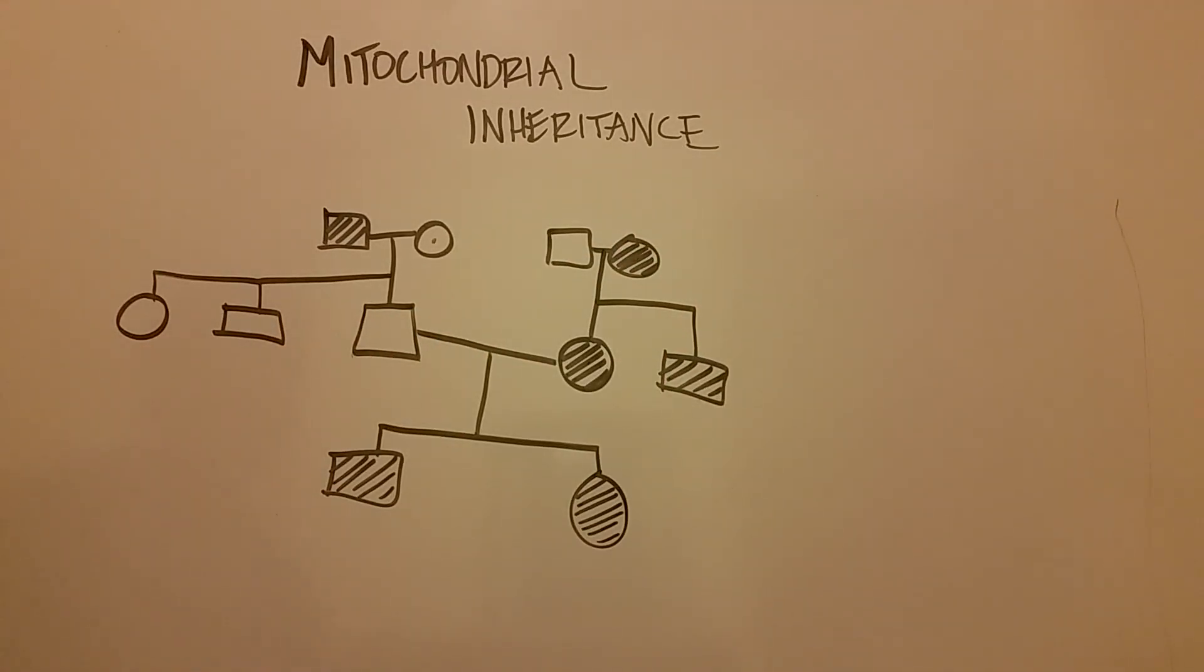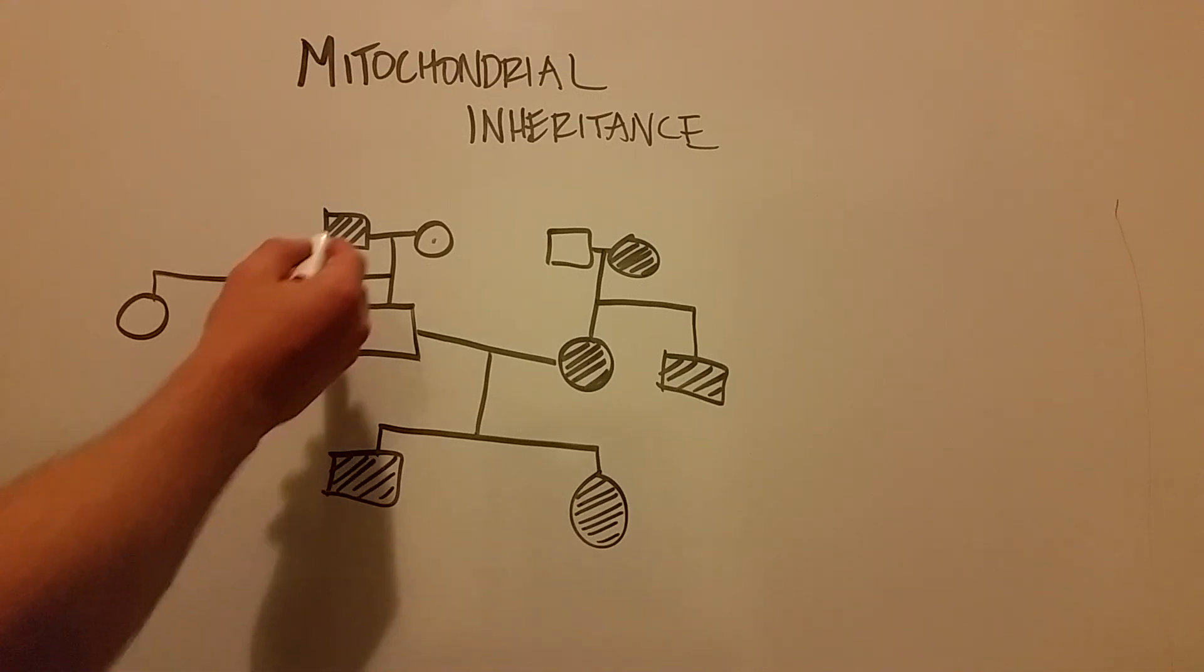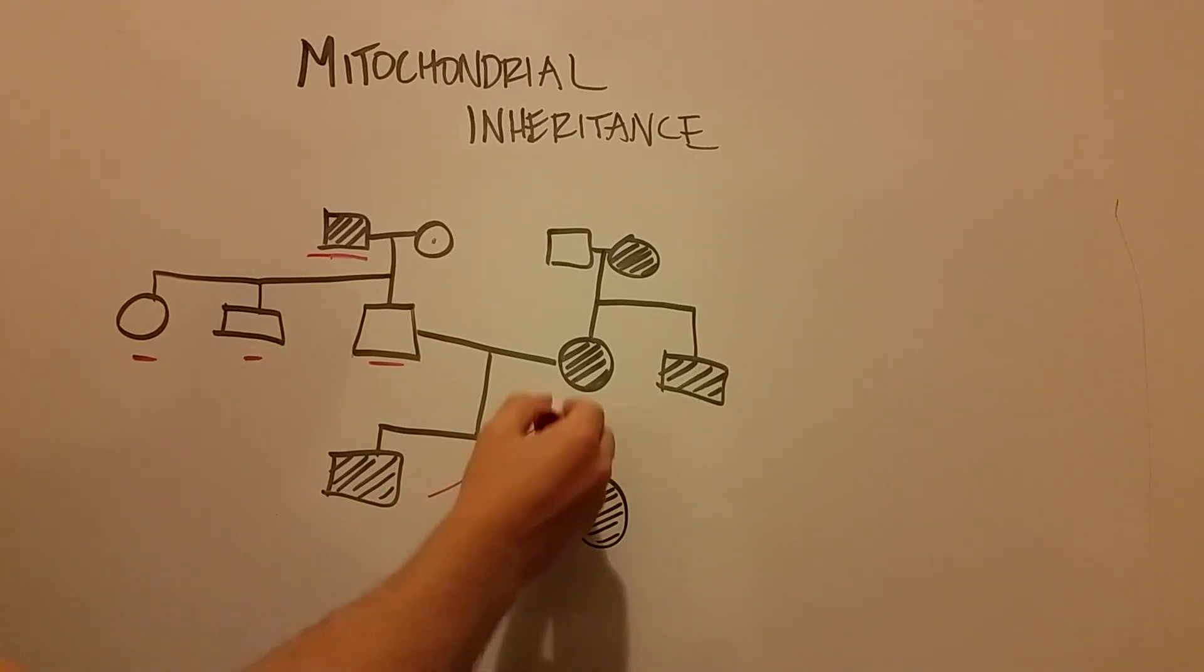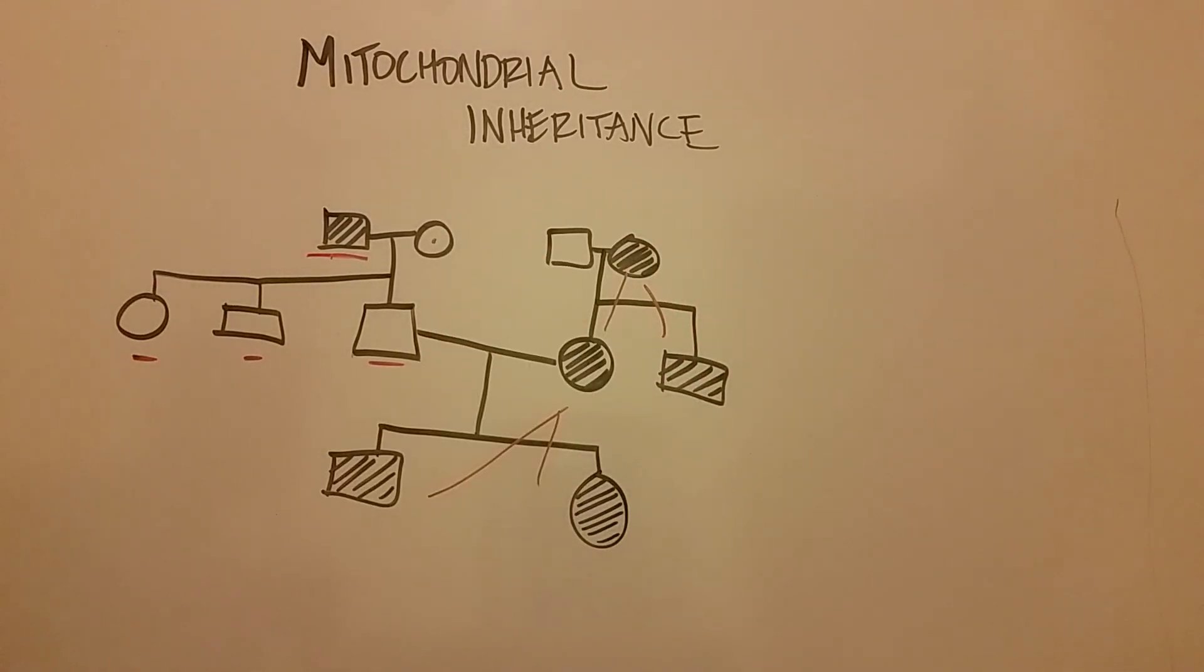So mitochondrial inheritance, it does not matter whether the father is affected, only if the mother is. And if the mother is, typically all the children can potentially have that trait. Not always, but usually they do. When you're trying to figure out a pedigree that looks like this, you might get tripped up and think this is autosomal dominant because it's present at every generation. It's very common. It's not a very rare trait like you might see with an autosomal recessive pedigree. However, the big tip-off here is the fathers that are affected will have no affected children, and the only affected children will have an affected mother. And that is mitochondrial inheritance.